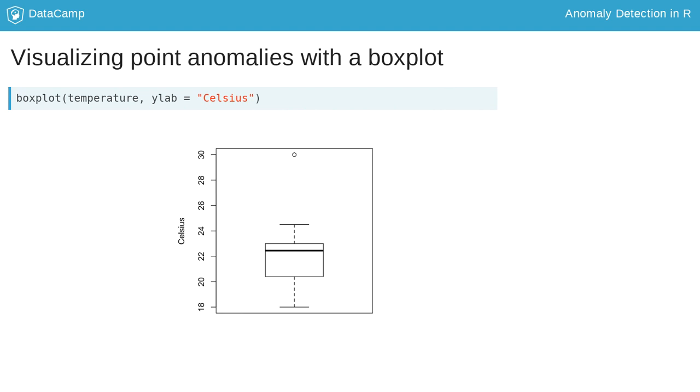It's important to note that a point anomaly is not always necessarily extreme. A point anomaly can also arise as an unusual combination of values across several attributes.